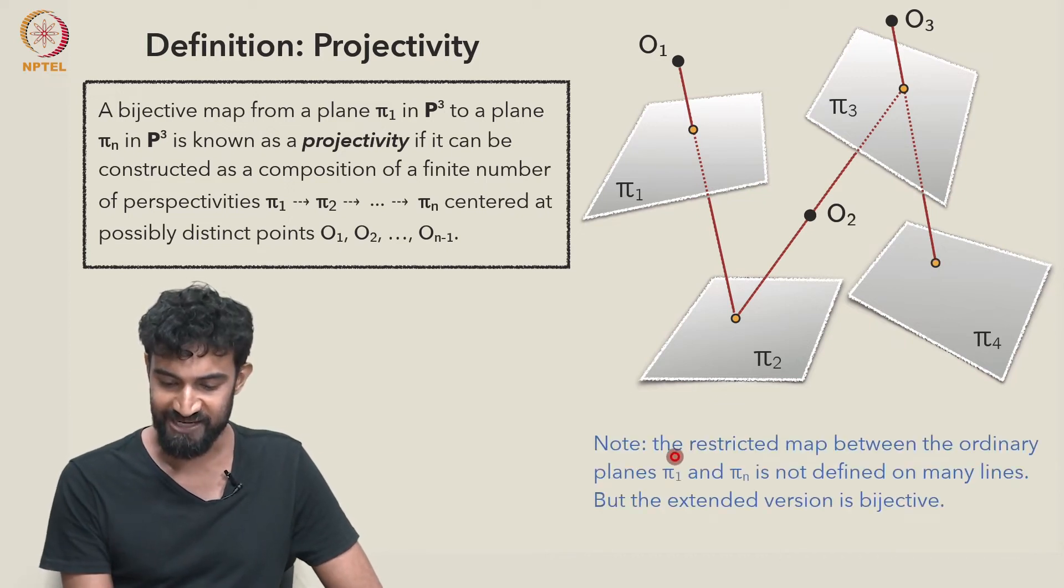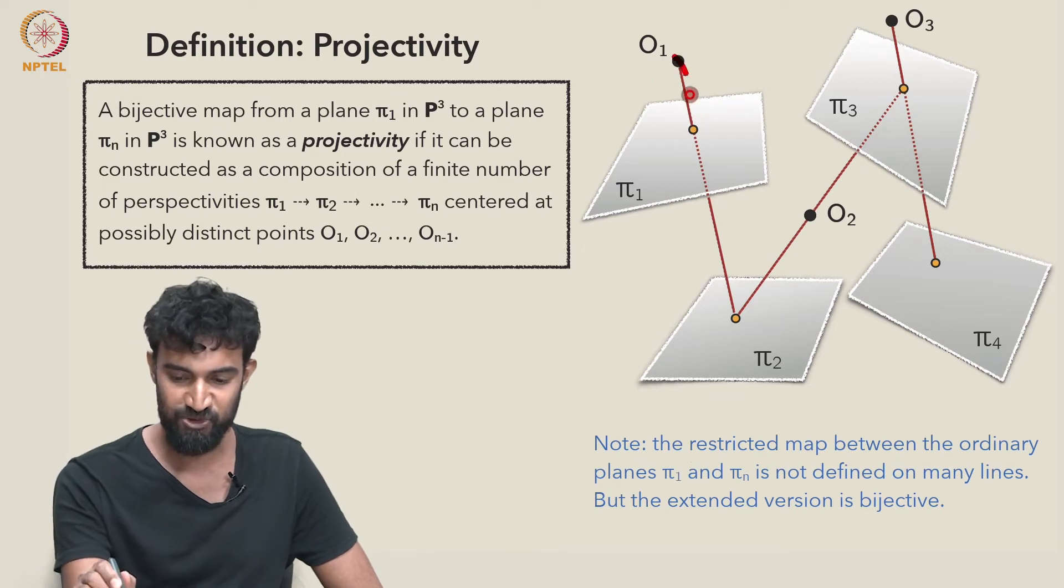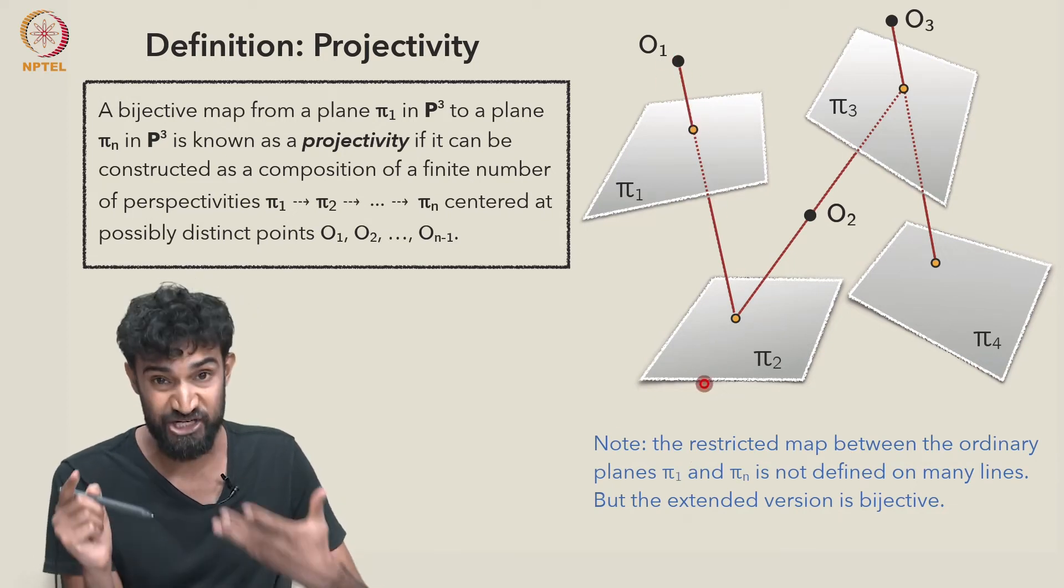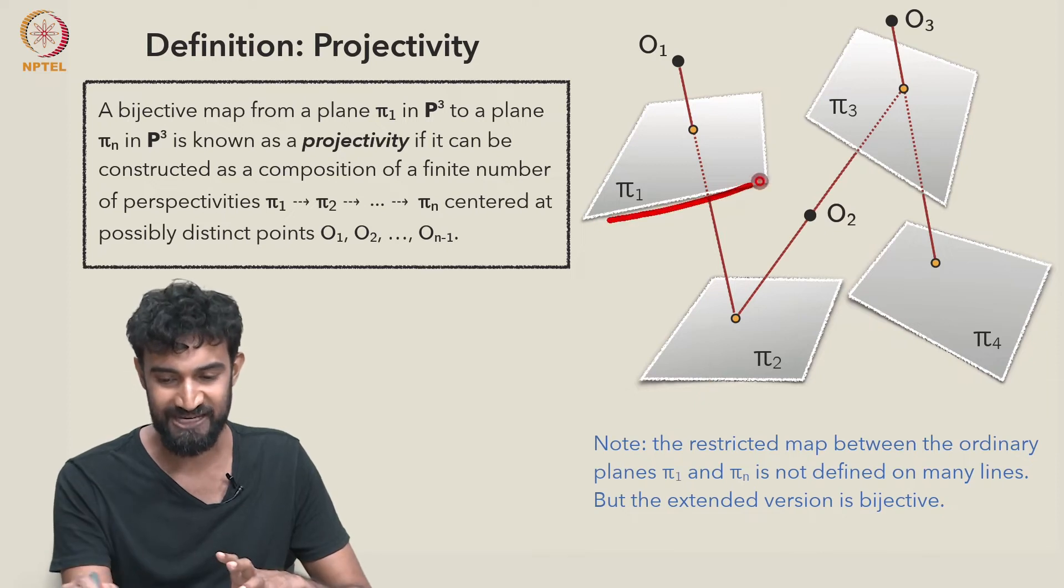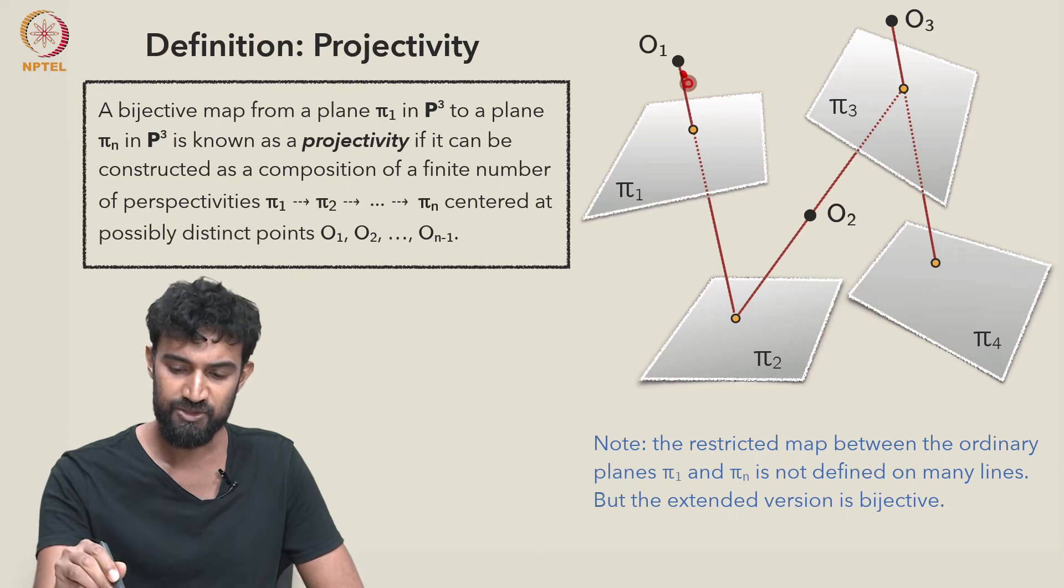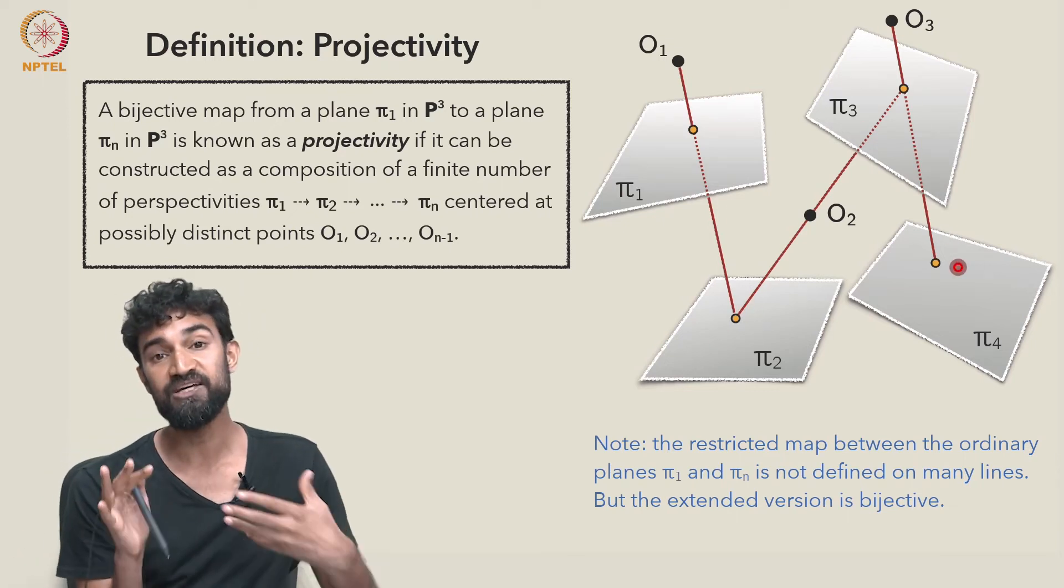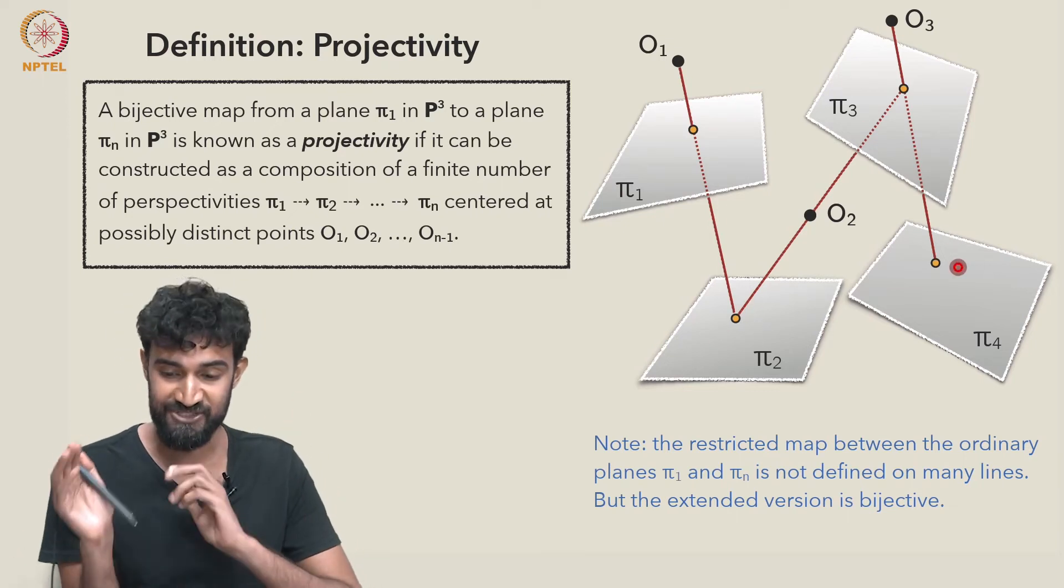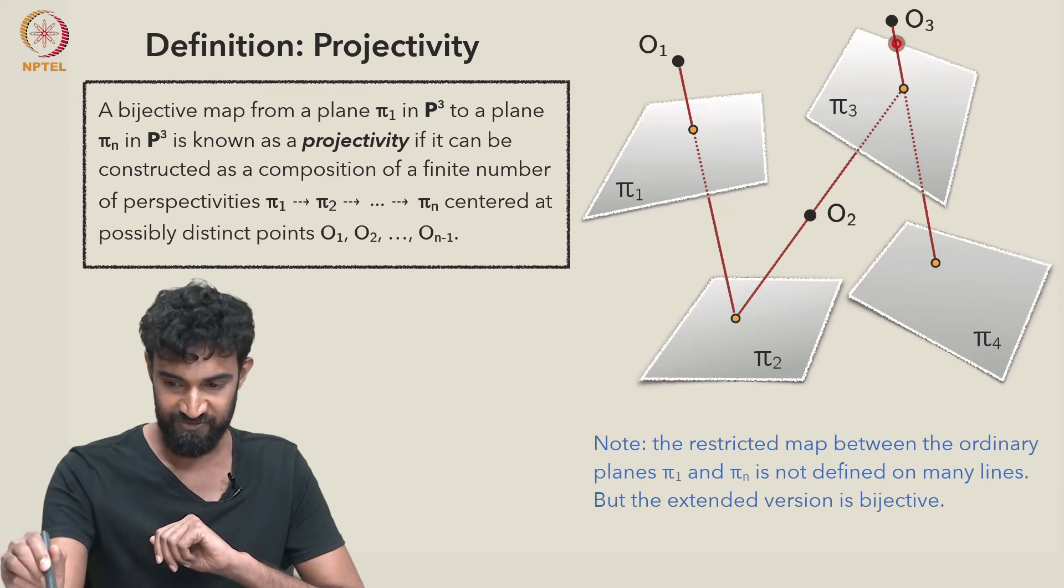So, notice that each of these perspectivities is a bijective map, since these are extended planes in P³, in the extended space P³. So each of these is individually a bijective map, so we're looking at the composition of three bijective maps, which will clearly be bijective then.